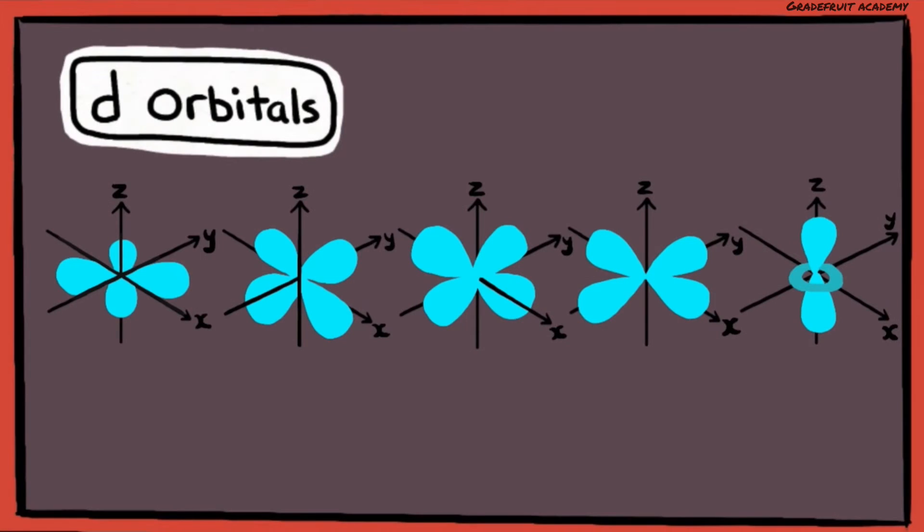So if the lobe is in between the X and Y axes, its name would be DXY. And if the lobe is in between the X and Z axes, its name would be DXZ. And lastly, if the lobe is in between the Y and Z axes, its name is DYZ.